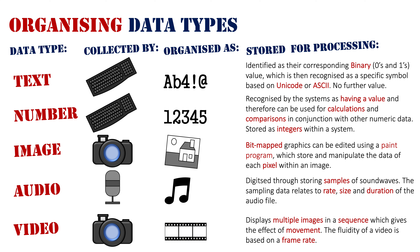I hope this video has given you an understanding of the data types and how they are organized on a system — how they are collected by collection devices, linking to that first information process, what they're going to look like once they go into the system, and how they are stored for processing. There's going to be further processing happening: editing, reviewing, or keeping records. We very rarely keep something in our information system as raw. It's going to get processed further, and you'll see more of that when we get to the next information process of analyzing — when we start changing the data to make it more meaningful for users.